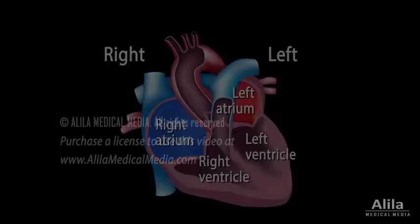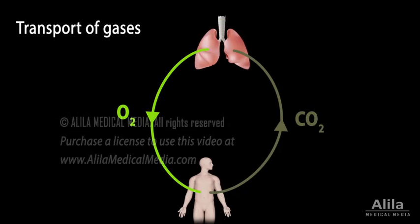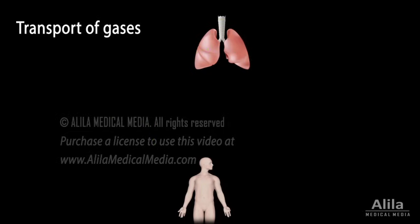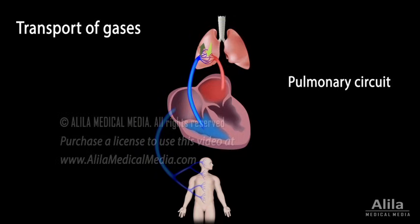The best known function of the circulatory system is perhaps the transport of inhaled oxygen from the lungs to the body's tissues, and removal of carbon dioxide in the opposite direction to be exhaled. Oxygen-poor blood from the body returns to the right side of the heart, where it is pumped to the lungs. In the lungs, blood picks up oxygen and releases carbon dioxide. Oxygen-rich blood then returns to the left side of the heart. This part of the system is called the pulmonary circuit.